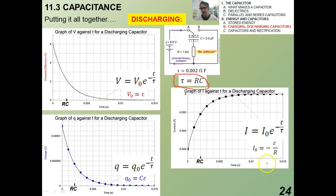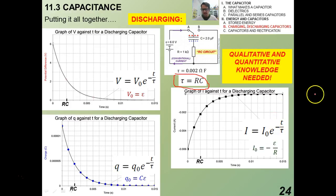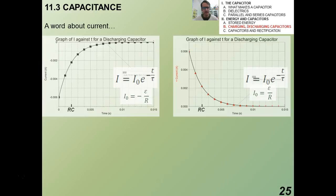Now, remember how I told you that a lot of times we ignore that negative sign for the current. Really, I of T for a discharging capacitor is this graph that goes, that exponentially goes to zero from a negative value. And that's because that I_0 is negative V over R. However, the IB data booklet just gives you I equals I_0 e to the negative T over tau. And I'll explain this a little bit more in the next slide. So again, for discharging, qualitative and quantitative knowledge are both needed.